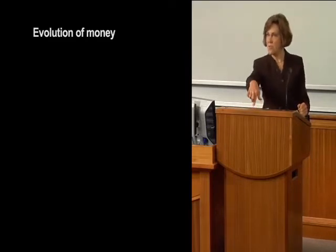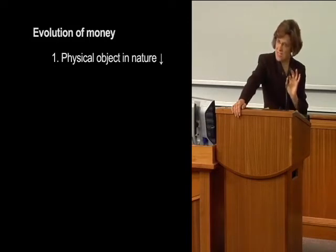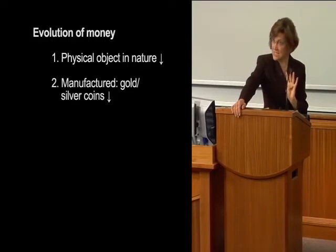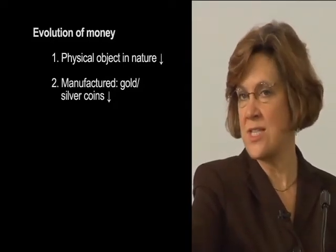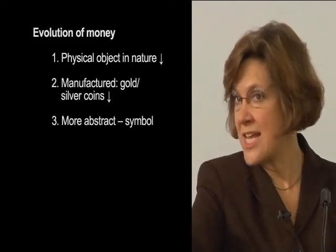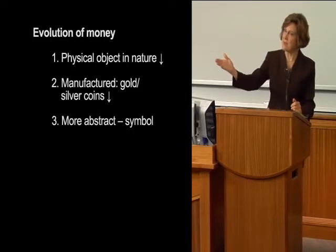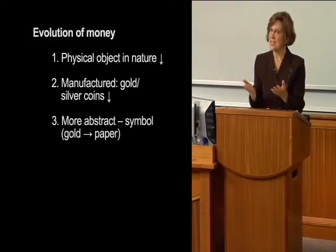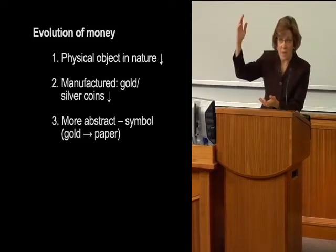Let me say a few words about the evolution of money. Originally, money was a physical object found in nature — cattle and grains, for example. It then evolved to become a manufactured physical object, such as gold and silver coins. Next, money became something more abstract — something symbolic of physical objects, such as gold and silver. At this stage, money became pieces of paper, such as paper money and stock certificates. While gold and silver coins have real value, paper doesn't, because it's completely separated from what it once represented: gold. This was an enormous evolutionary leap, because money moved from being a concrete, physical object to being a symbolic, abstract idea.